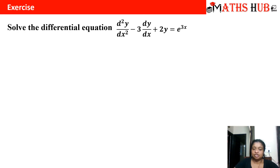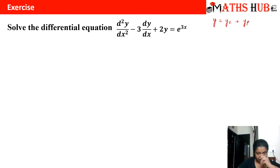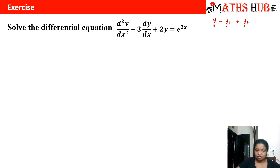Let us apply this rule to a question. We have to solve d²y/dx² − 3(dy/dx) + 2y = e^(3x). This is a non-homogeneous equation, so the general solution comprises the complementary solution and the particular integral. In symbolic form this becomes (D² − 3D + 2)y = e^(3x).